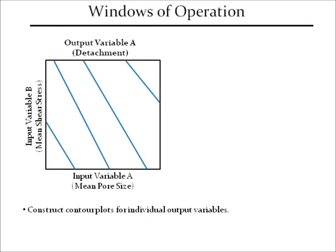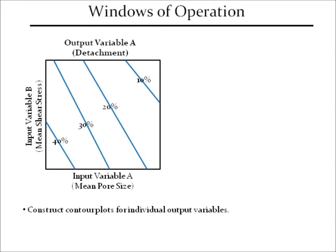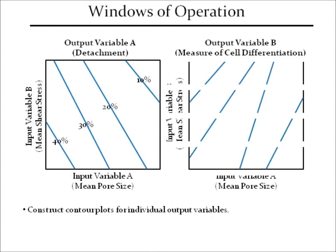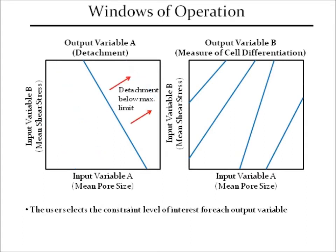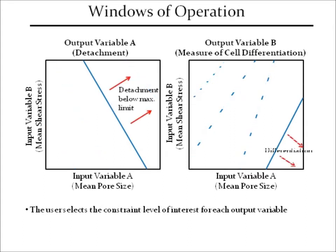This contour plot identifies areas for which specific operating conditions will lead to performance criteria above or below specified levels. Similar plots can then be made for other output variables of interest, such as the fold change in COX2 gene expression. The researcher can then simplify the plots by defining a maximum or minimum limit desirable for each output.